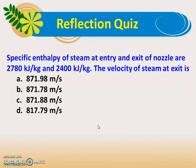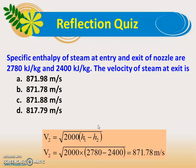Numerical example 1: the specific enthalpy of steam at the entry and exit of the nozzle are 2780 kJ/kg and 2400 kJ/kg. Using V2 = √(2000·(H1 − H2)) = √(2000·(2780 − 2400)), the exit velocity works out to 871.78 meters per second.